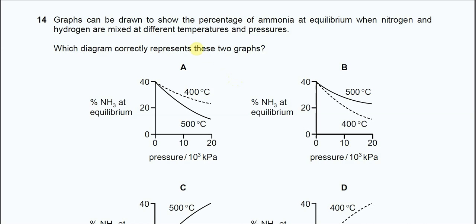Question 14. This question is about ammonia formation from nitrogen and hydrogen gas, happening at different temperatures and pressures. The question asks which diagram correctly represents two graphs.